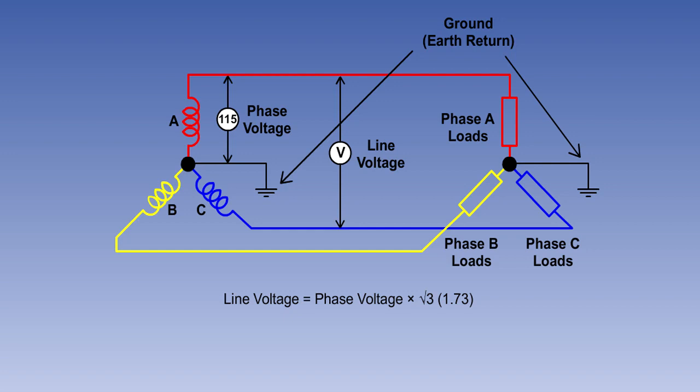The phase voltage of a typical aircraft supply system would be 115 volts. So from the formula, we can work out that the line voltage is 115 multiplied by root 3, which is approximately 200 volts.